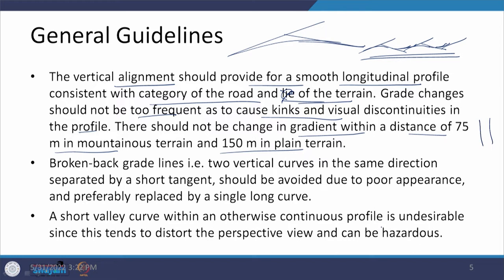The next case is related to broken back grade lines — two vertical curves in the same direction, similar to what we discussed for horizontal curves. As far as possible, we should try to omit these situations. The reason is that there is a frequent changeover from one gradient to another and then a third, which is uncomfortable for driving. In terms of aesthetics, the appearance is bad, and it is always better to make it one single vertical curve. If that is not possible, we need to consider providing straight sections in between the two curves.